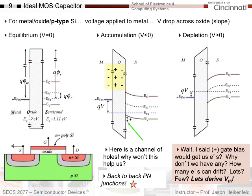So we join the metal gate, oxide, and semiconductor. I'll add one more term: φ_f, which is how far below the intrinsic Fermi level for undoped silicon my actual semiconductor Fermi level sits. On an energy band diagram, multiplying charge times potential gives energy, telling me how far down the Fermi level has shifted. The oxide band gap is around 9 eV, silicon around 1.1 eV — that's why the oxide is insulating.